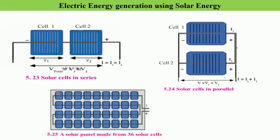We have already studied that from one solar cell we get 0.5 volts potential difference. So if there are 36 such cells, they will give a total potential difference of 18 volts. The current remains the same at 3 amperes because they are connected in series. A good solar cell can have an efficiency of around 15%, meaning if a solar panel receives 100 watts from solar radiation, the electrical power output will be 15 watts. This solar panel of 36 cells gives 18 V and 3 A.